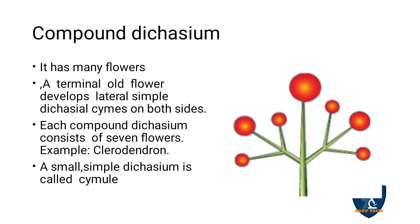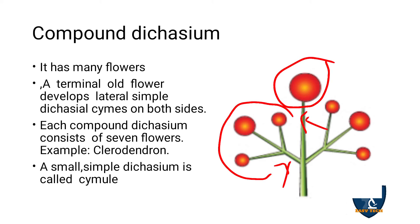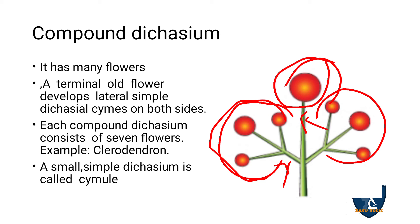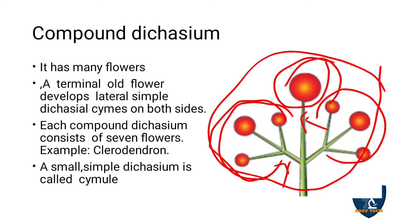Compound dichasium: at the main axis, you have a terminal floret, and from the branches you have a compound structure — it looks like a compound dichasium. This is one simple cyme and this is another simple cyme, but the whole viewed together looks like a compound structure. So the full arrangement is considered as one inflorescence and is called compound dichasium. Example: Clerodendron. A small simple dichasium is called a cymule.